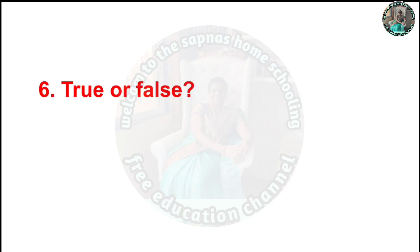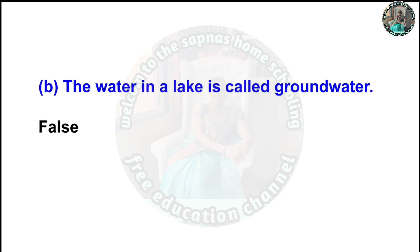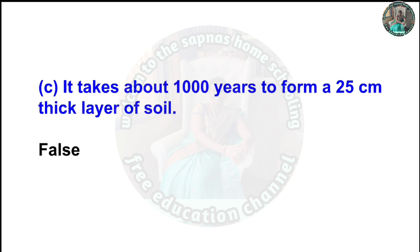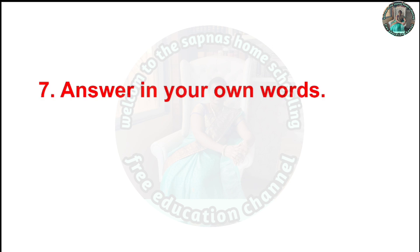True or False: Land and soil are the same thing - False. The water in the lake is called ground water - False. It takes about 1000 years to form a 25 cm thick layer of soil - False. Neon is used in decorative lights - False.